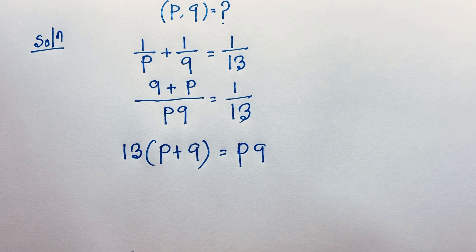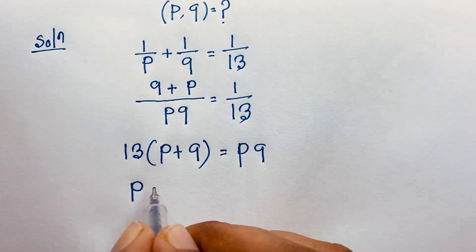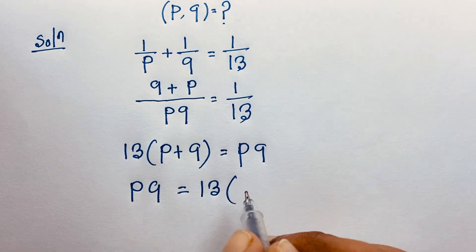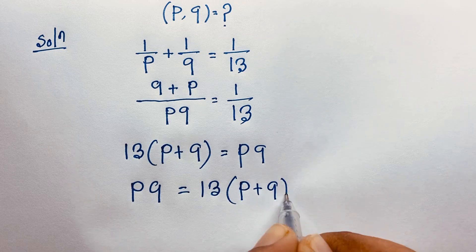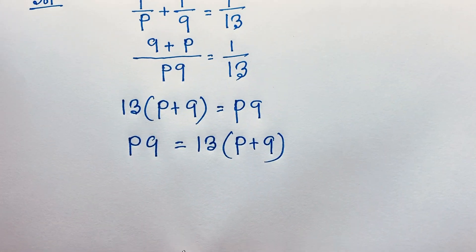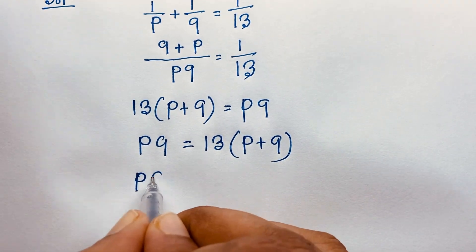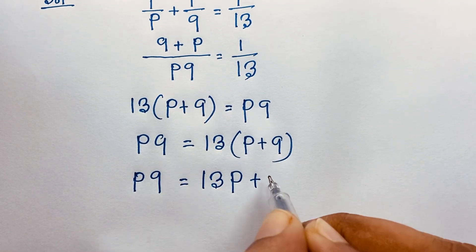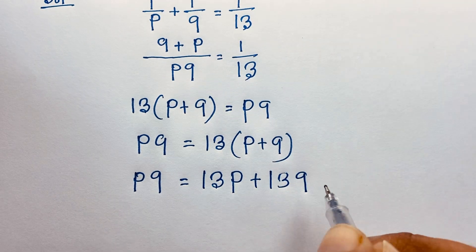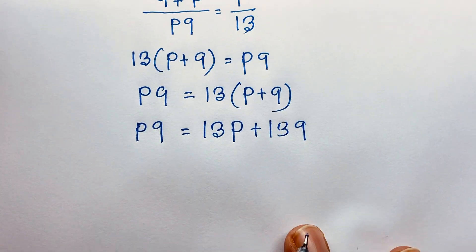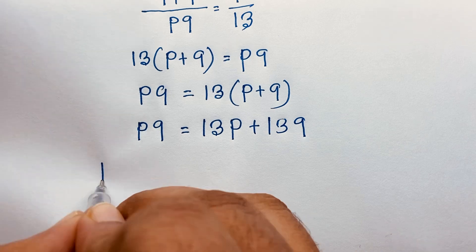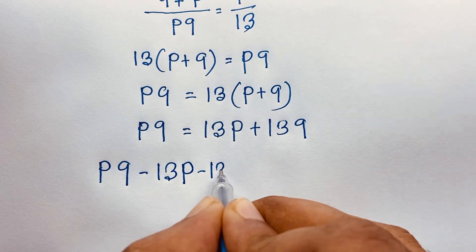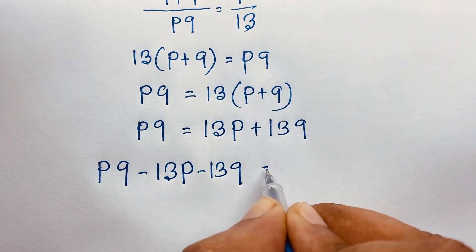Now taking everything to one side, we have PQ equals 13P plus 13Q. Moving all terms to one side, PQ minus 13P minus 13Q is equal to 0.